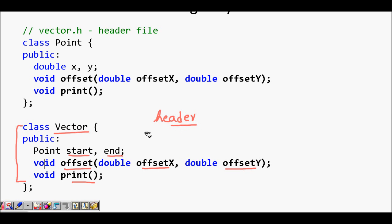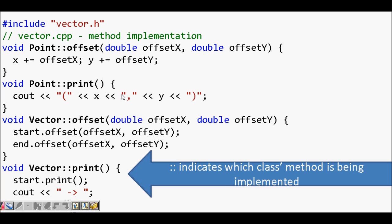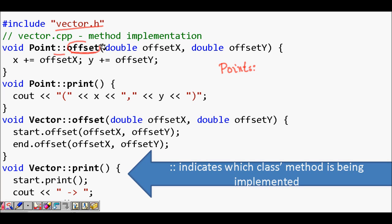Now let's come to the implementation part. This is the .cpp file which has the actual implementation. When defining member functions outside the class, you need to tell the compiler which class the function belongs to. You give the class name — like Point — then a double colon (::), which is the scope resolution operator. So Point::offset tells the compiler that this offset function belongs to the Point class.